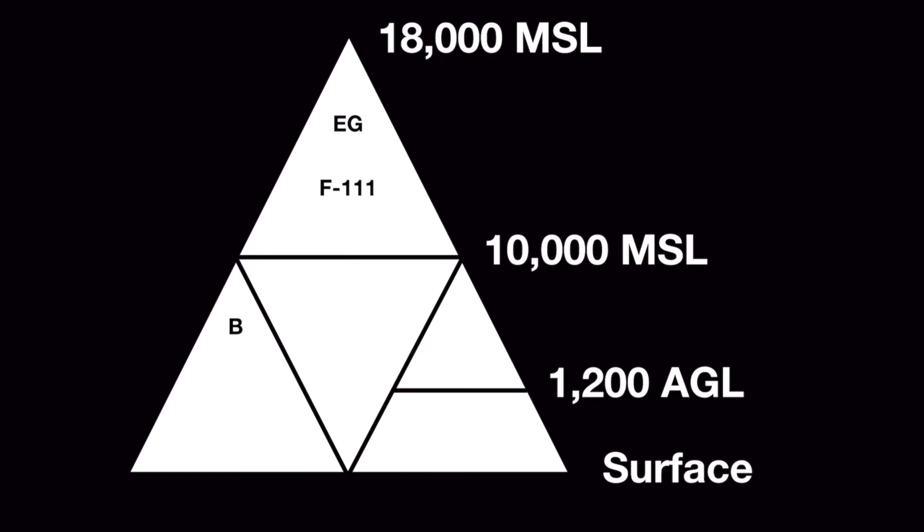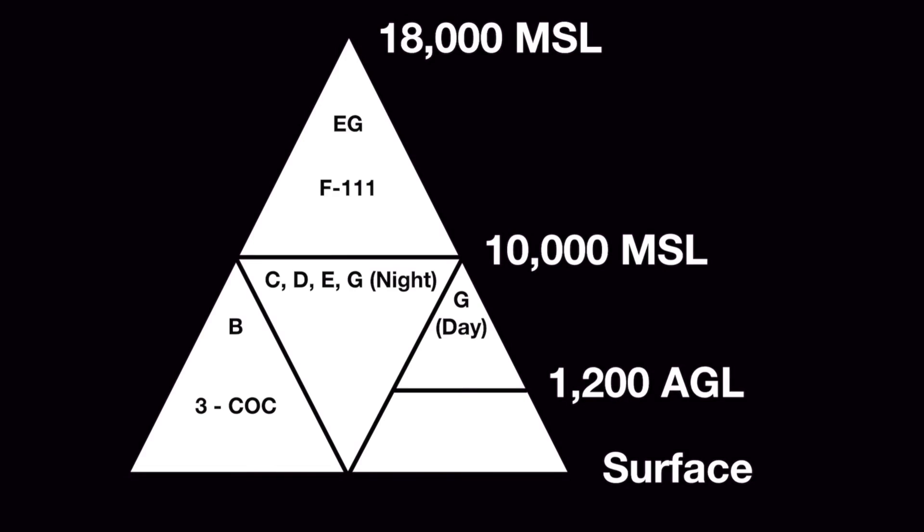Now onto the bottom half of the big triangle. Moving left to right, we'll put a B in the leftmost triangle. In the middle triangle, we'll put C, D, E, G and then in parentheses, night. In the far right triangle, we'll put G and day in parentheses. If it helps you to remember what to put where, please notice that these are in alphabetic order from left to right, plus the outside triangles only have one airspace in them. Going back to the leftmost triangle, we'll put a 3-COC, which reminds us that in class Bravo airspace the minimums are 3 statute miles visibility and to remain clear of clouds.